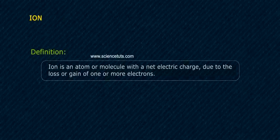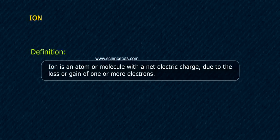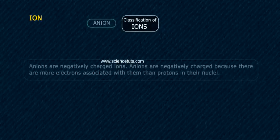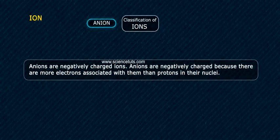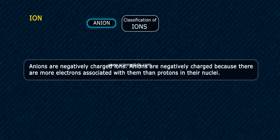Ion. Definition: An ion is a species that is electrically charged because there are more or fewer electrons associated with them than protons in their nuclei.